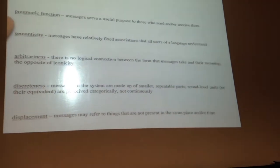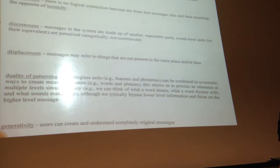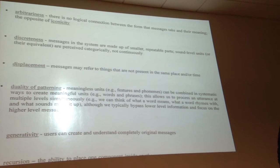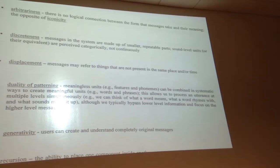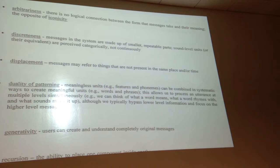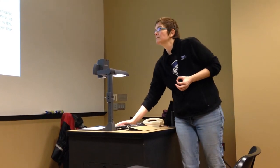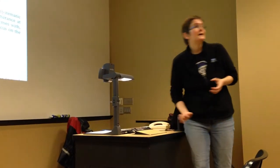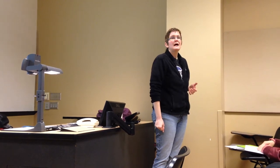The next characteristic, which is actually fairly rare in communication systems, is something called arbitrariness. Arbitrariness means that there's no obvious connection between the form of the message and what it means. For example, I can say 'cat' and you know what I mean. But I could also say 'neko,' 'koshika,' 'mao' — I could say lots of different things.